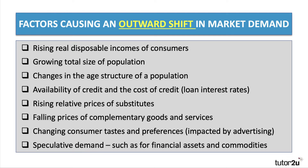Availability and cost of credit — including credit card interest rates, loans, and overdrafts — clearly affect market demand, particularly for products that require some sort of finance, such as new cars or home improvements. The relative price of substitutes can also matter: market demand for tea might be affected by an increase in the relative price of coffee or hot chocolate, and rising house prices can increase demand for rented accommodation.